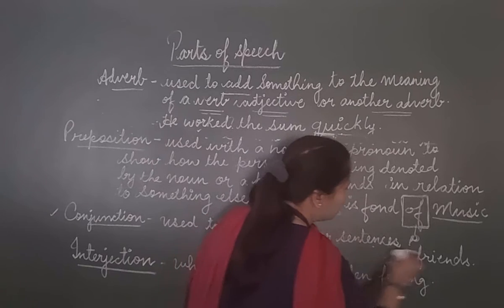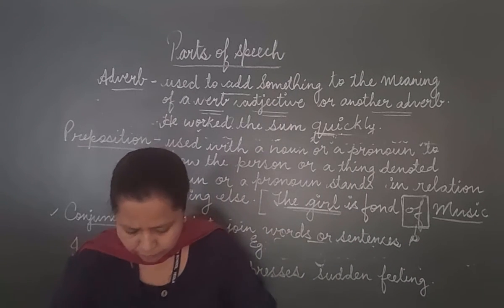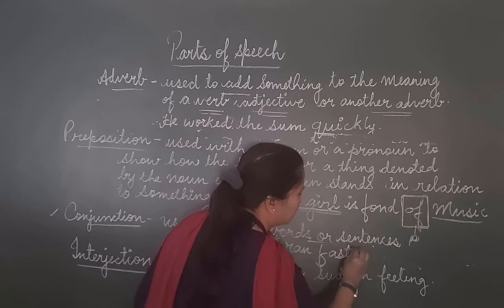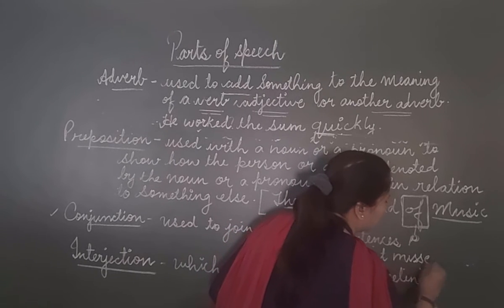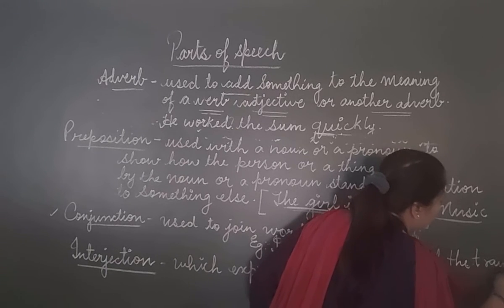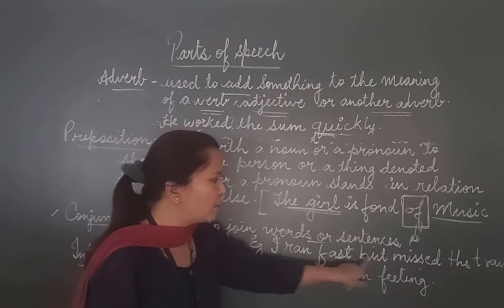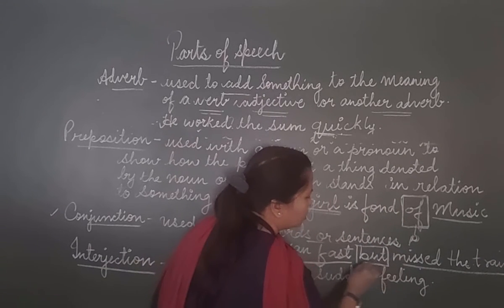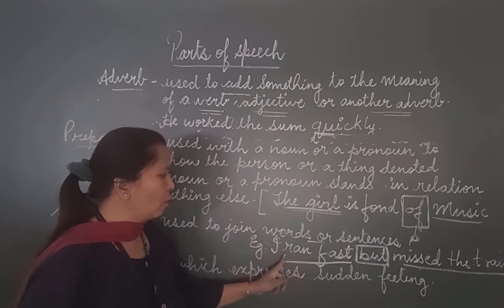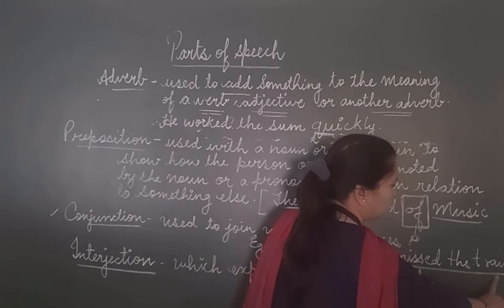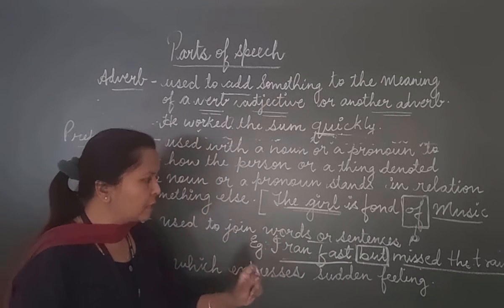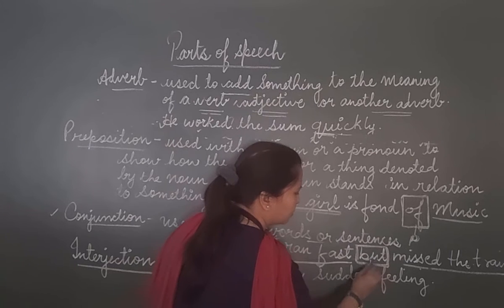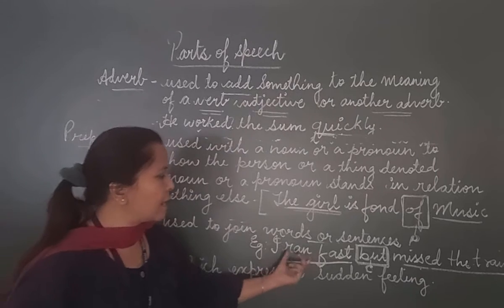Now we will see an example of joining sentences: 'I ran fast but missed the train.' Here, 'I ran fast' and 'missed the train' are two sentences joined by the conjunction 'but'. So 'but' becomes a conjunction because it is joining two sentences. A word which joins two words or two sentences is called a conjunction.